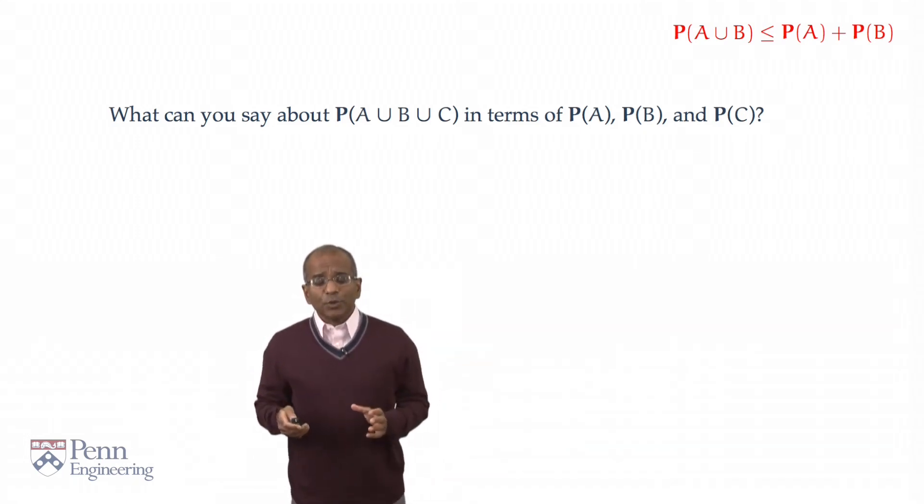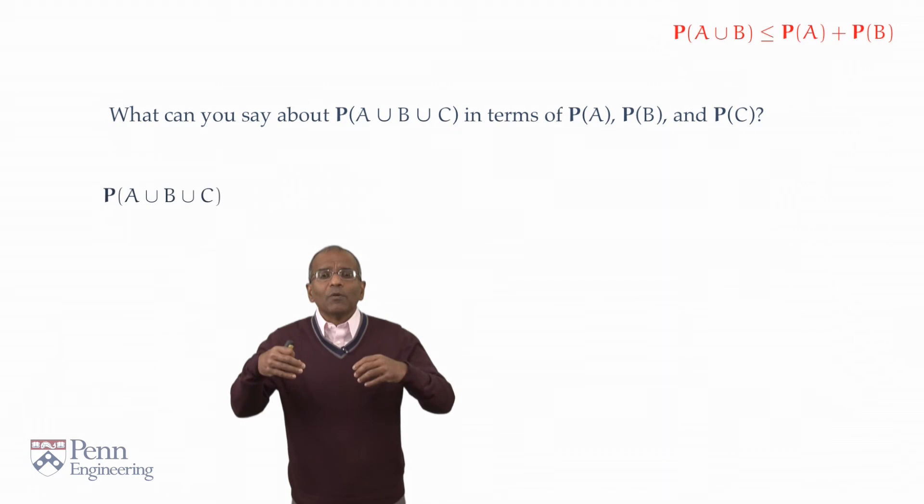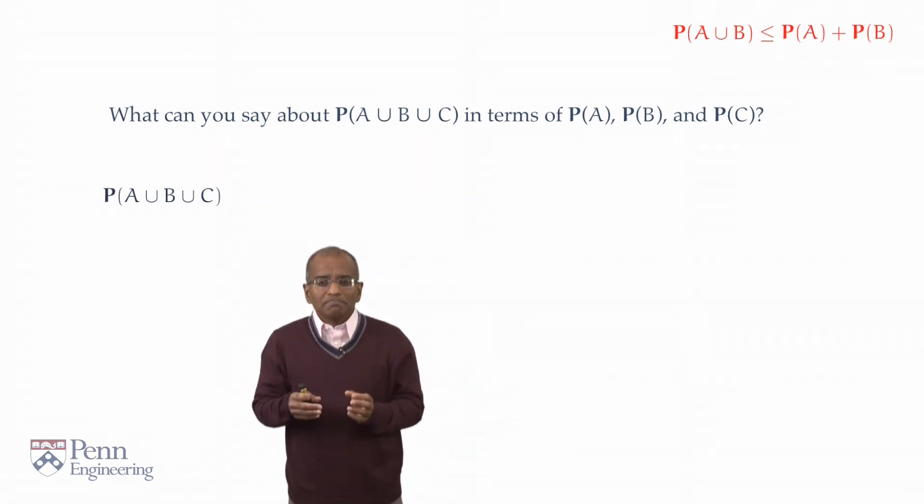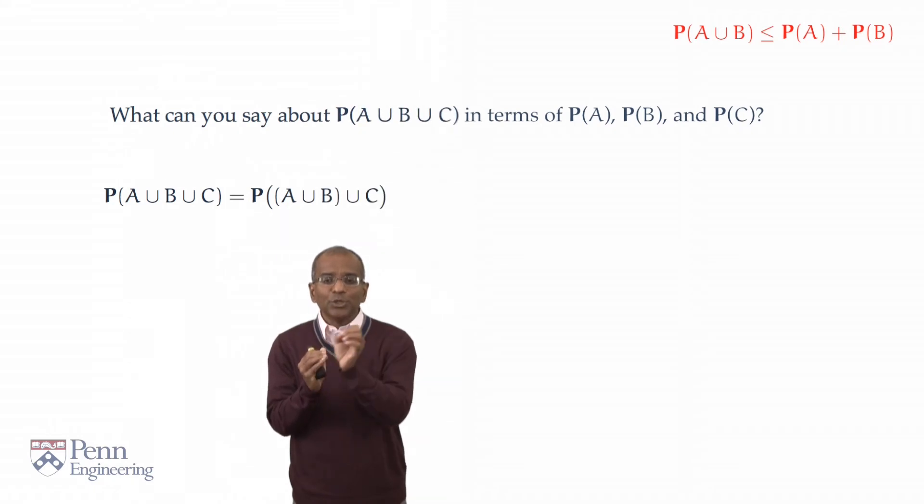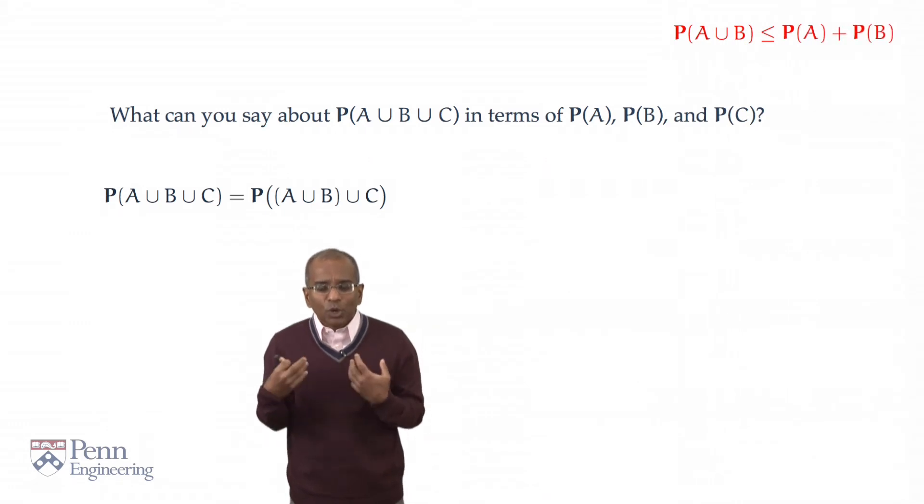All right, so our idea is going to be to try to decompose A union B union C. And we'd like to use what we already know about the probability of the union of two elements. So let's try the following decomposition. Group A union B together as one set and take its union with C. Of course, we can do unions in any grouping we like whatsoever. This is the associative property of unions, just like additions. You can do them in any order you like.